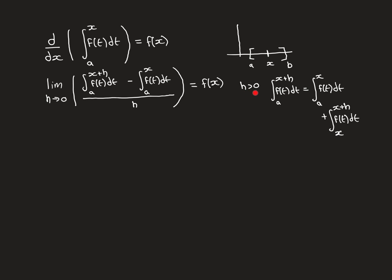In the case that h is positive, x plus h is greater than x. So we can split the integral into two parts by the additivity property: the integral from a to x of f(t) dt, plus the integral from x to x plus h of f(t) dt. Plugging this in, the integral from a to x cancels with the minus integral from a to x, and we're just left with the integral from x to x plus h. So the limit simplifies to the limit as h approaches 0 of 1/h times the integral from x to x plus h of f(t) dt.